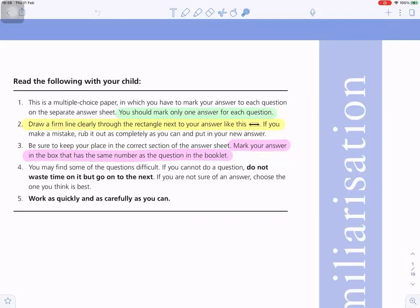Draw a firm line clearly through the rectangle next to your answer like this. If you make a mistake, rub it out as completely as you can and put in your new answer. Be sure to keep your place in the correct section of the answer sheet. Mark your answer in the box that has the same number as the question in the booklet.